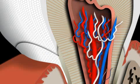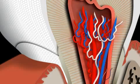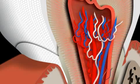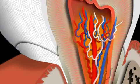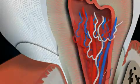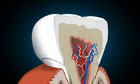Pulpitis is the medical term for the inflammation of a tooth nerve. In order to understand the specifics of a tooth nerve inflammation, it is helpful to take a look at the anatomy of teeth.